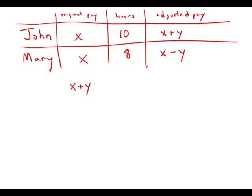So X plus Y over 10 equals X minus Y over 8. I'm going to cross multiply and get 8X plus 8Y equals 10X minus 10Y. I'm going to add 10Y to both sides.